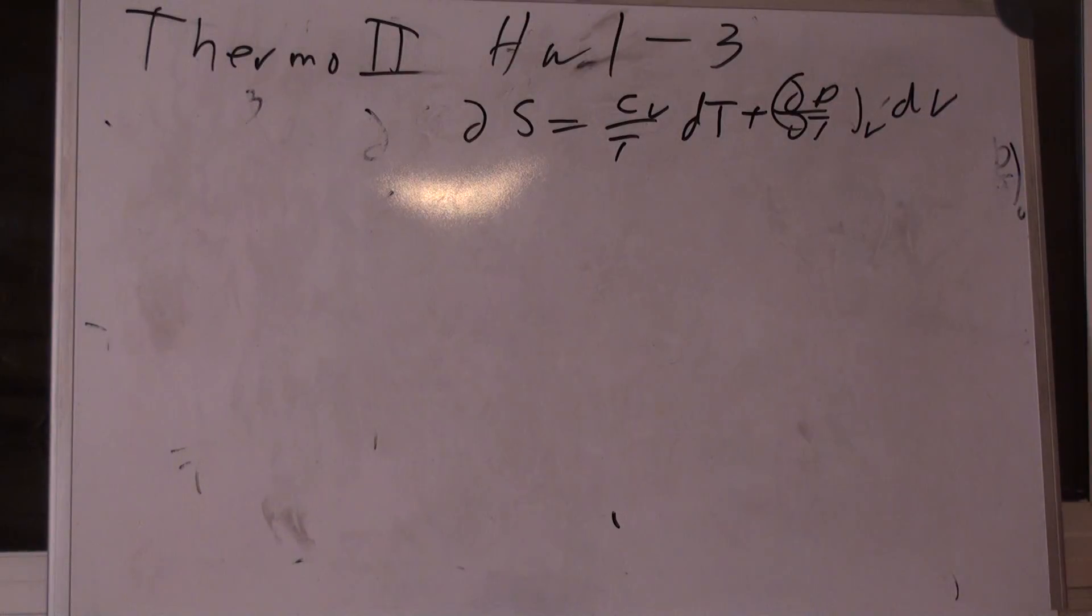Before we do that, it says to relate how heat capacity changes with volume, van der Waals equation of state. Now, one thing that's missing though, is this is supposed to say under isothermal conditions. So add that in. Under isothermal conditions. Okay, now, relate. What does that word invoke for you?